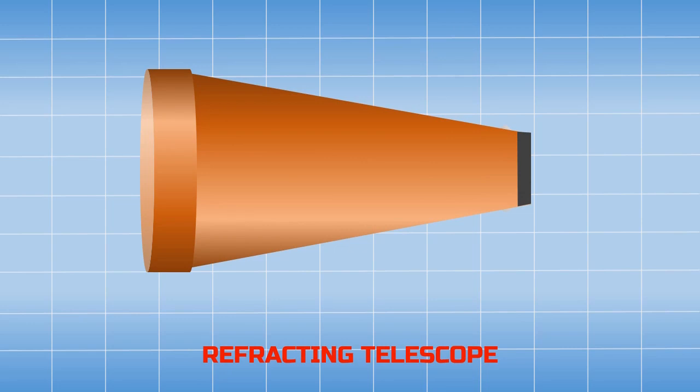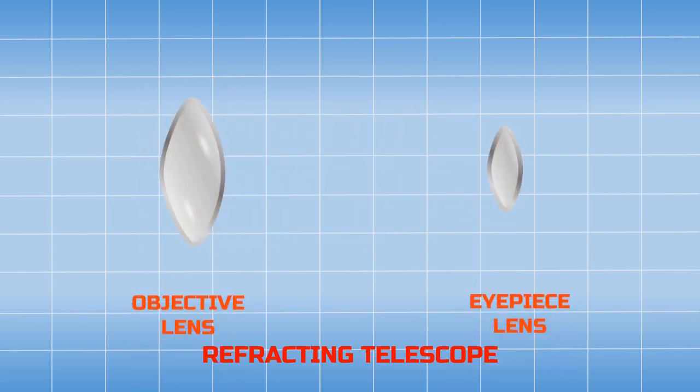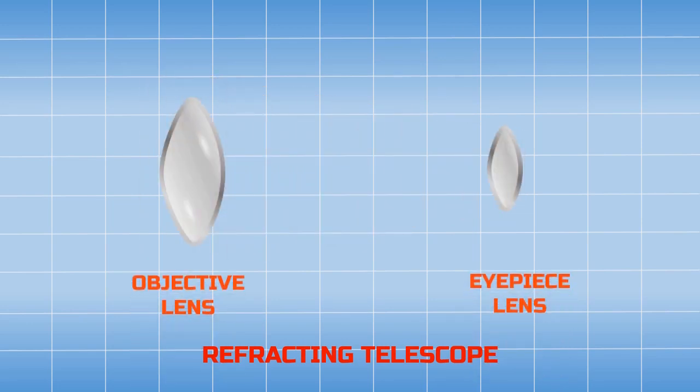A refracting telescope mainly consists of a big objective lens and eyepiece lens. Both lenses used are convex lenses. When light from a distant object falls on the objective lens, refraction causes parallel light rays to converge at a focal point. It creates a real image of the object being studied. The magnification happens in the eyepiece lens, which takes the real image and magnifies it for the viewer's eyes.